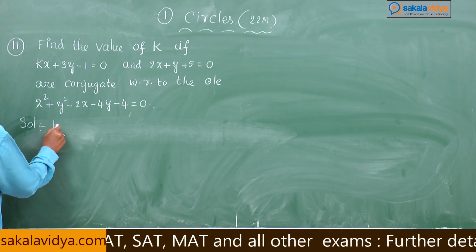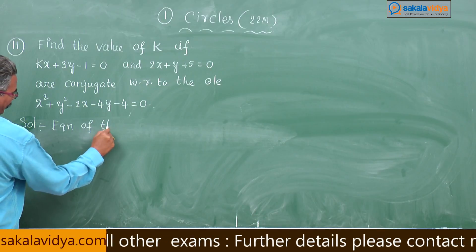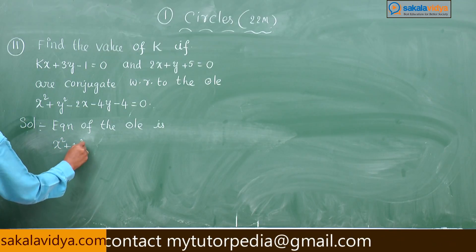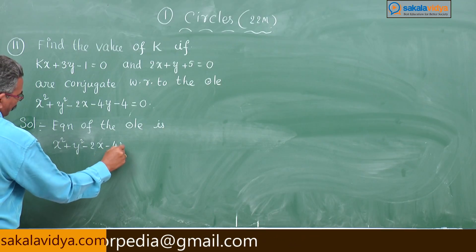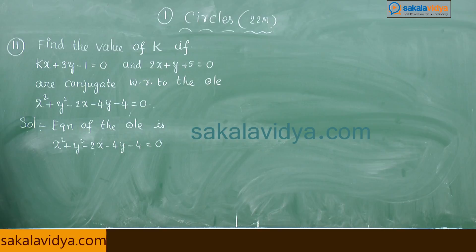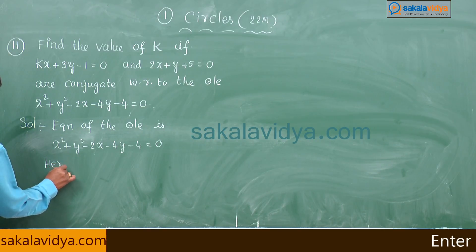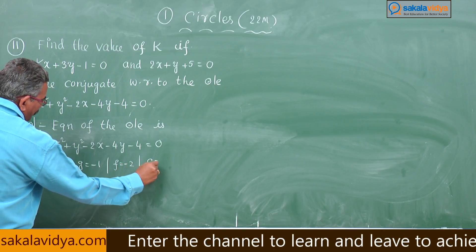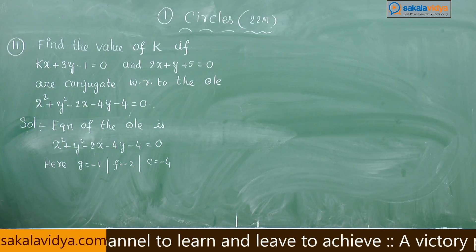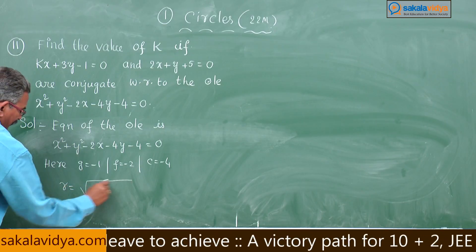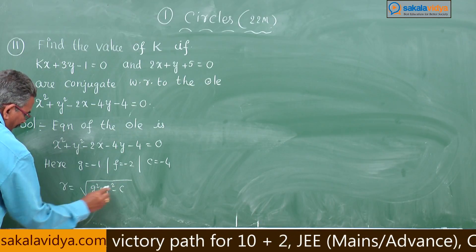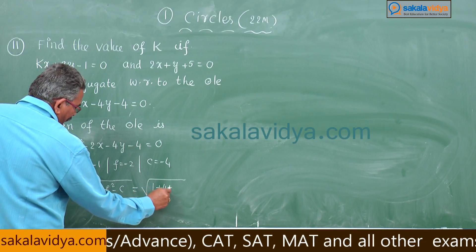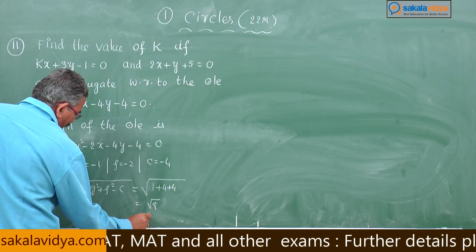Solution: the equation of the circle is x² + y² - 2x - 4y - 4 = 0. Here g = -1, f = -2, c = -4. The radius r = √(g² + f² - c) = √(1 + 4 + 4) = √9 = 3.